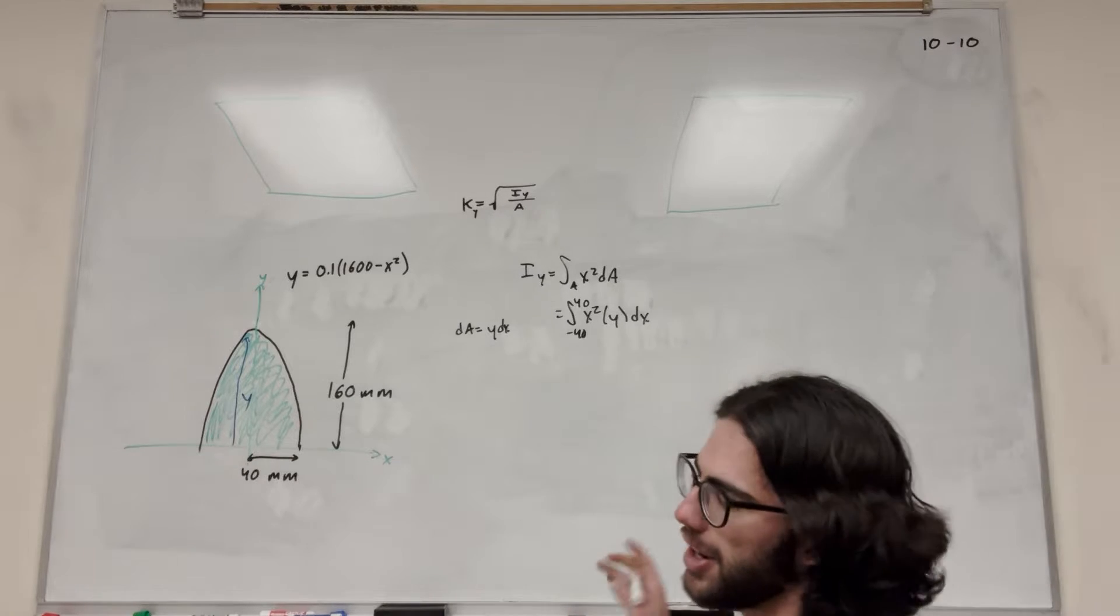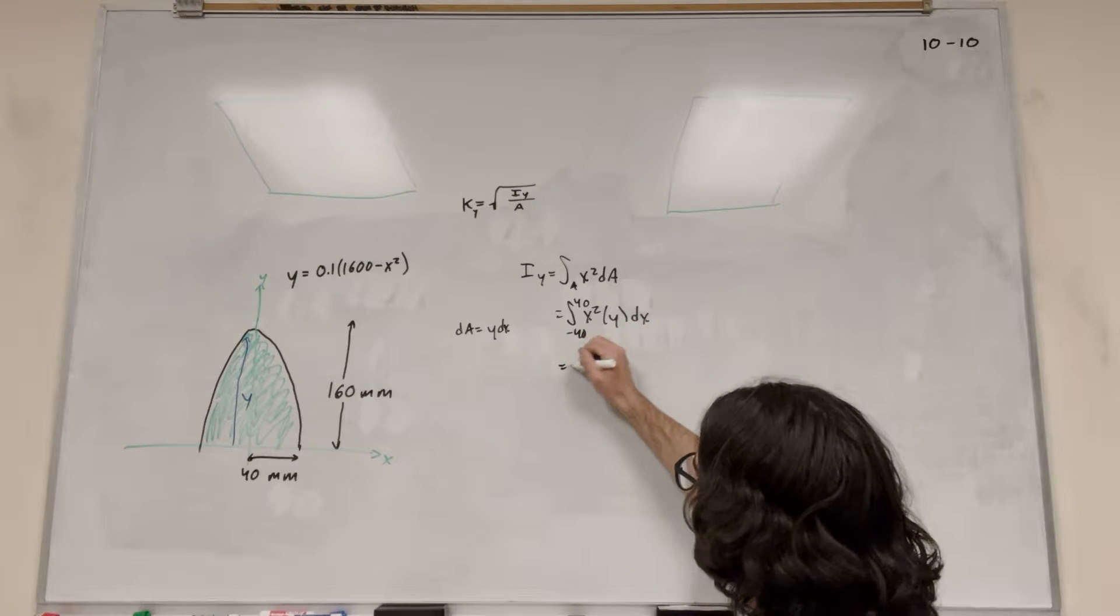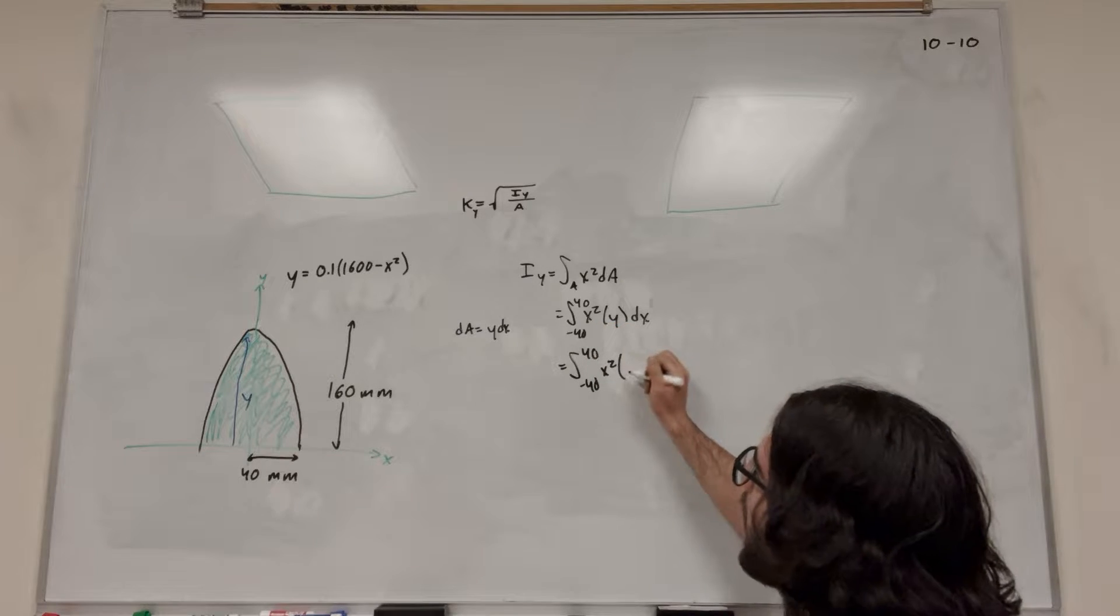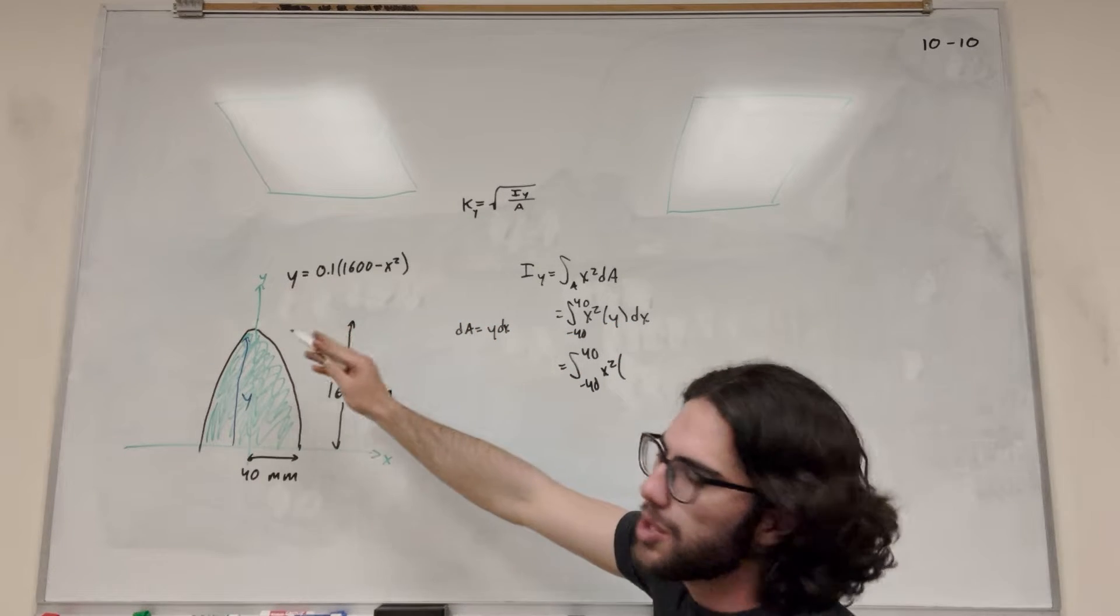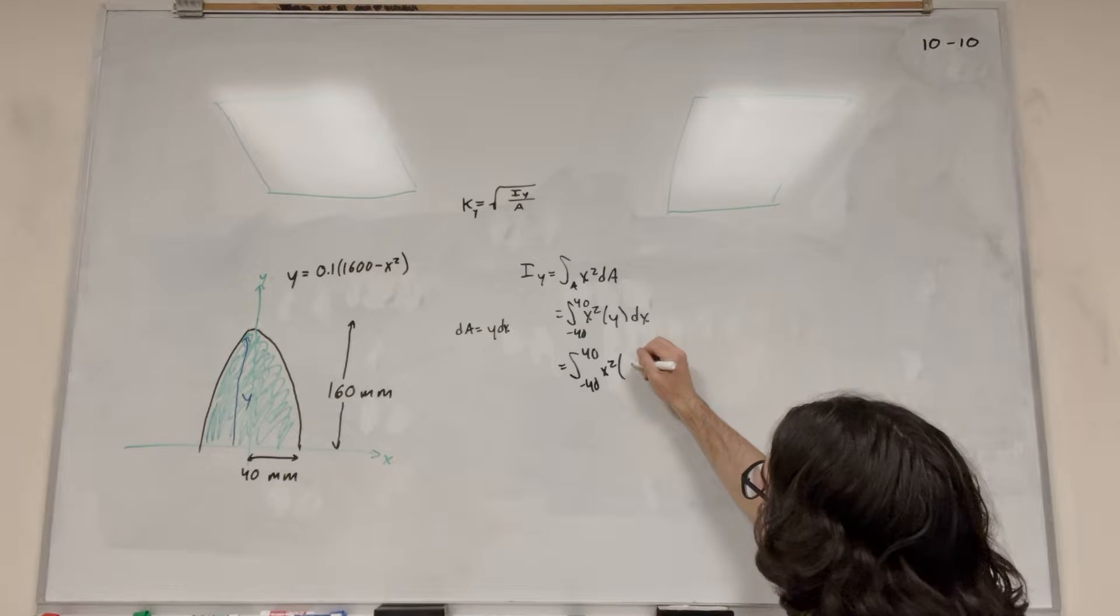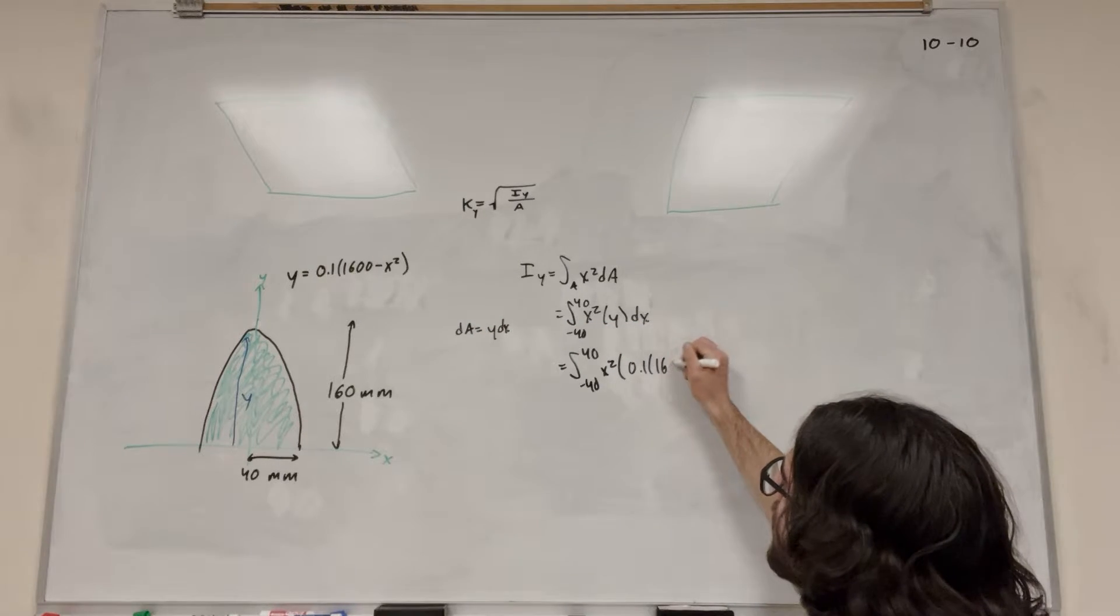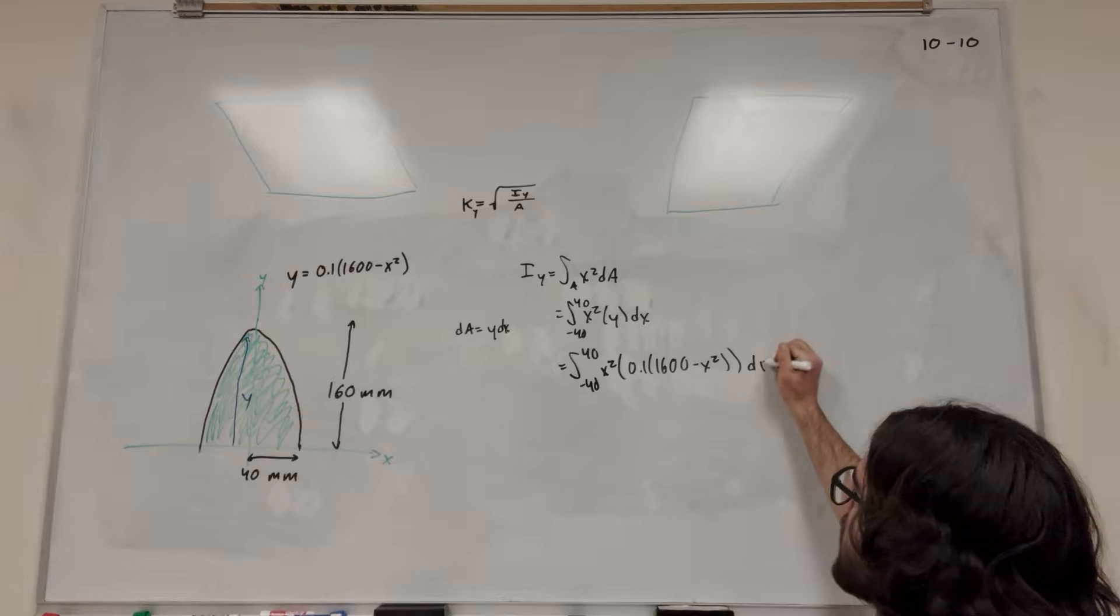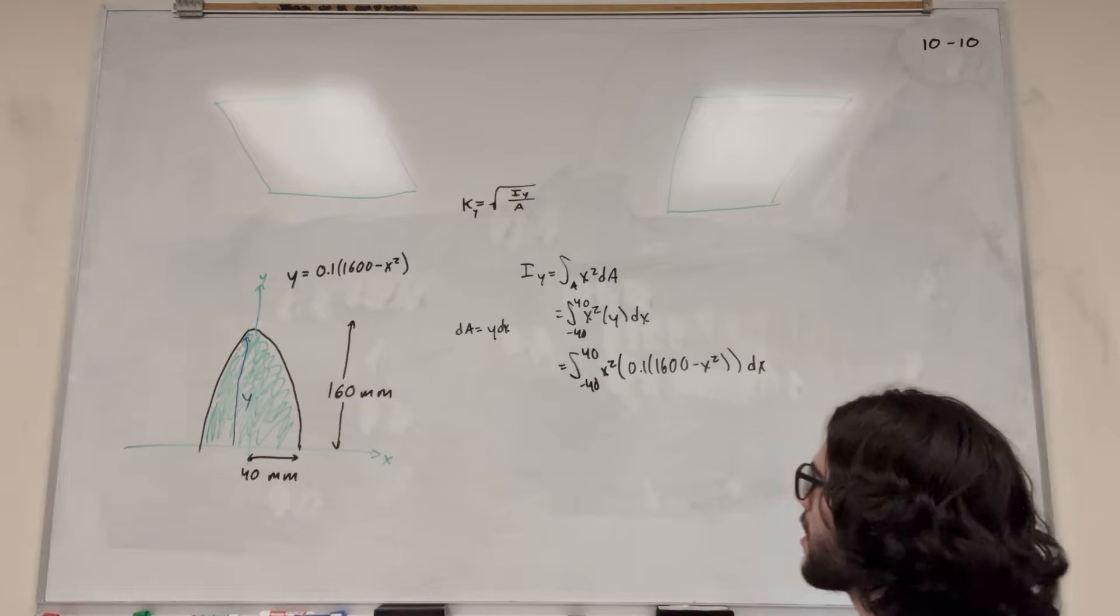But now we have a y in our integral, and we need to get rid of this y. So to get rid of that y, negative 40 to 40, x squared. But the y is defined by this, which is in terms of x. So we're just going to plug this in for y. 0.1 times 1600 minus x squared. And then dx. So now we have something we can integrate. So let's just go ahead and solve this integral.